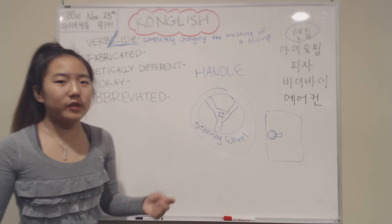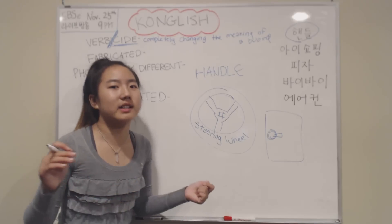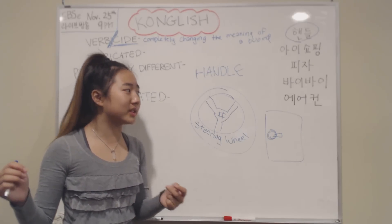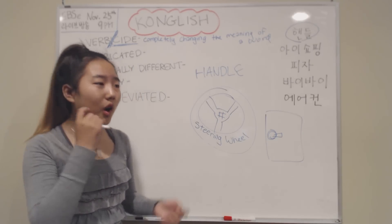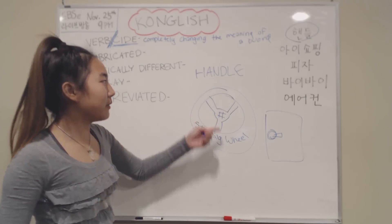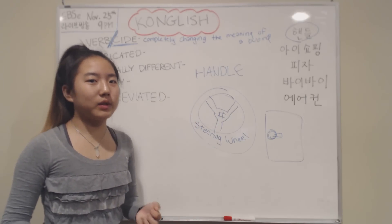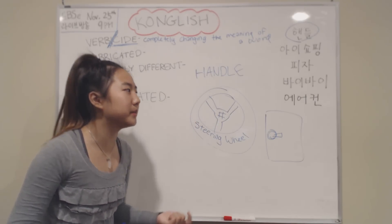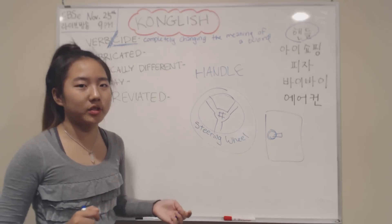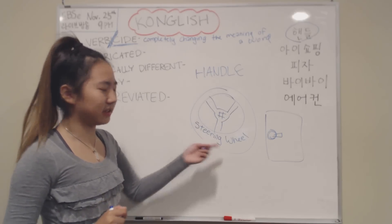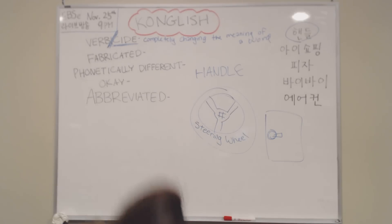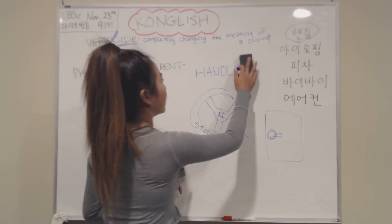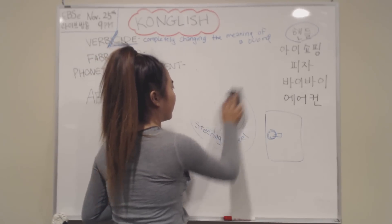This is a steering wheel here in America — it's not a handle. So in English, if you come to America and say stuff like that, people will be really confused. Because it's like, 'Oh, you have a nice handle' when you get in the car, but then they'll get in the car and be like, 'There's no handle there — that's a steering wheel.' And people will be very confused.